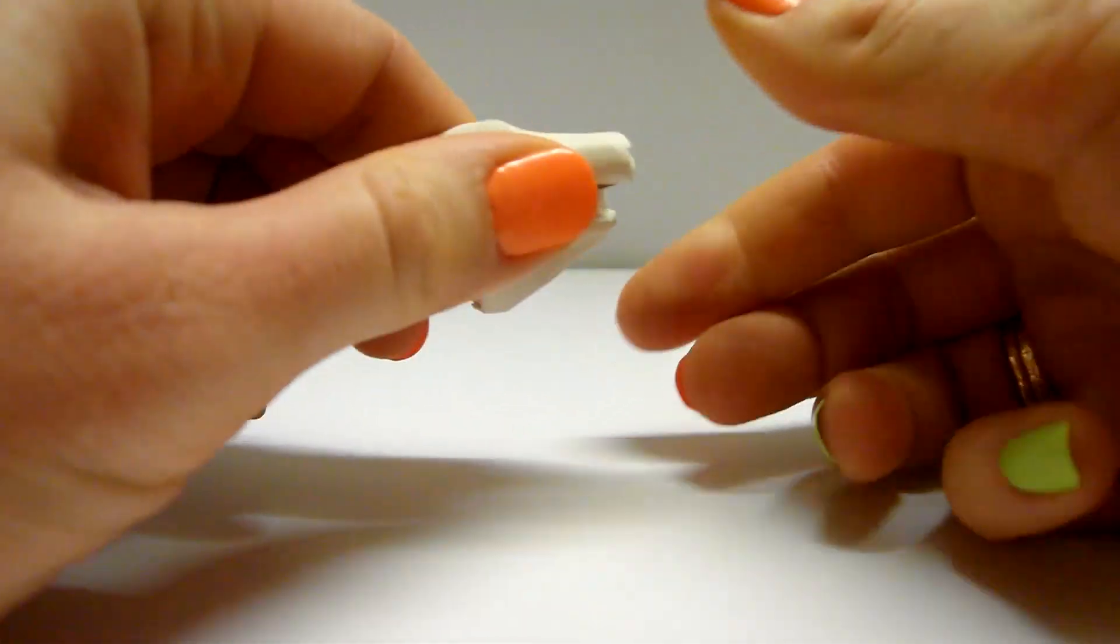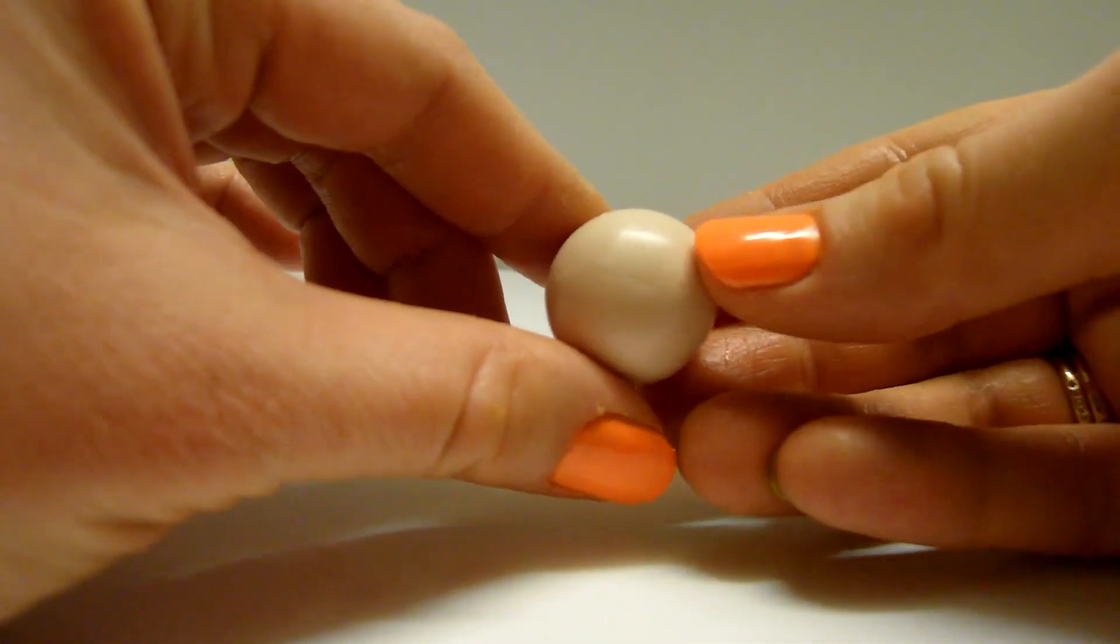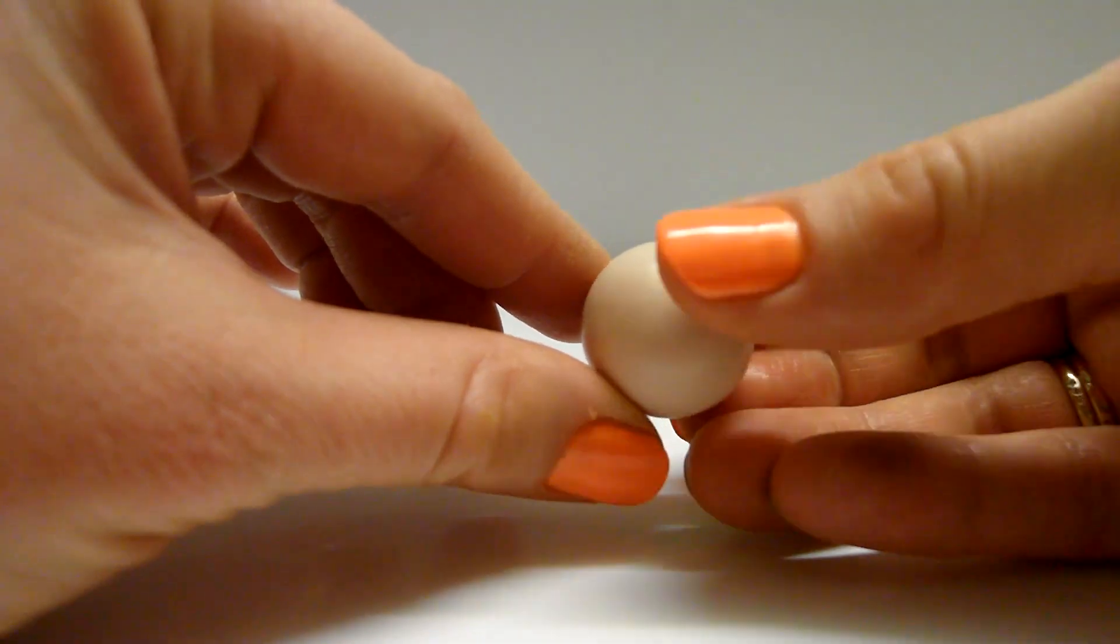For this, mix white and a bit of brown clay. We get beige clay. Make a ball of it.